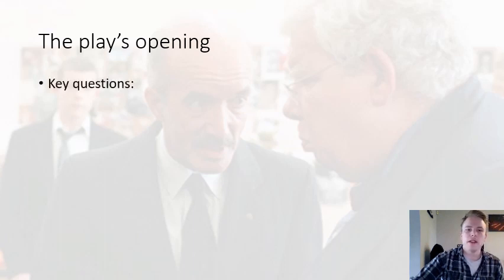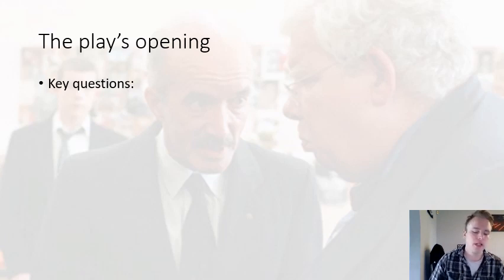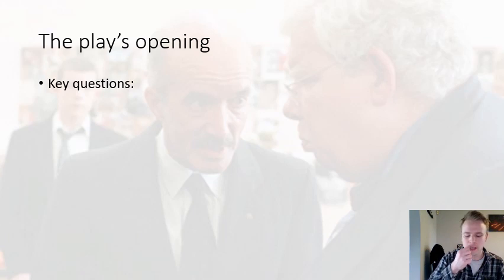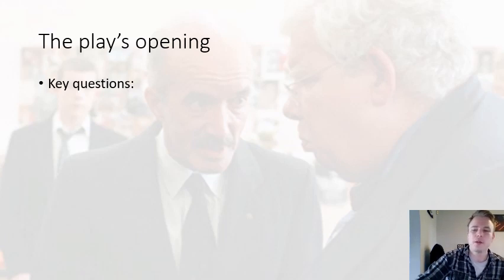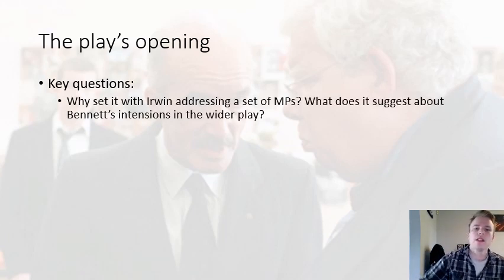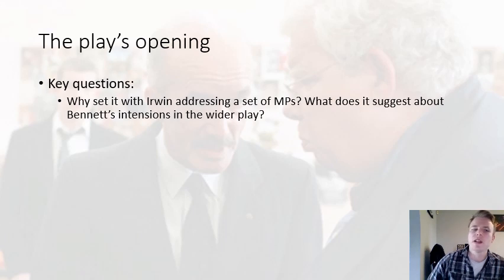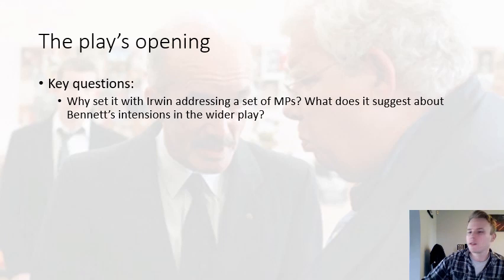This opening is important in many ways, and there are a couple of key questions you'll potentially use — possibly in an introductory section. I think bits of the introduction are usable in relation to the abuse question and definitely the education question. For all three questions, parts of it will help you contextualize an overall argument. The first thing to think about is: why has Bennett given Irwin addressing a group of MPs? MPs are associated with parliament — they're lawmakers — so it's setting things within a political sphere before you ever get into the school system. This does suggest things around Bennett's political intentions with the play.